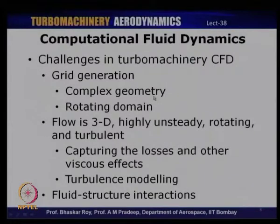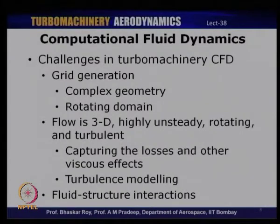To simulate compressor flow, a simple 2D Euler analysis cannot estimate performance accurately since Euler does not give losses. A 2D Navier-Stokes solution would miss 3D losses, so a full 3D Navier-Stokes solution is needed. Grid generation itself is a challenge because the geometry can be quite complex — blades can be twisted with different curvatures, and various radii at the leading edge, trailing edge, and blade-hub junctions make the geometry extremely complicated.